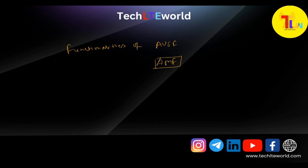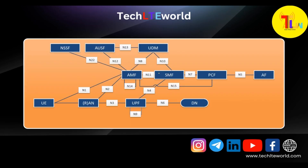Here we are also taking the reference point-to-point architecture. You can see here the AUSF is connected with your AMF and UDM. The main fact is: what does AUSF do? AUSF supports 5G authentication and authorization procedures. AUSF plays a vital role in verifying the subscriber's identity and ensuring that they have the proper authorization to access the network.